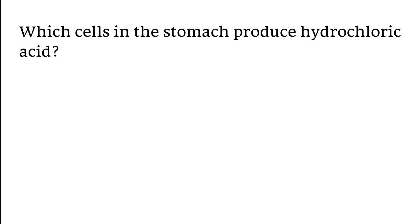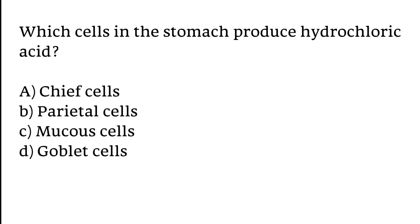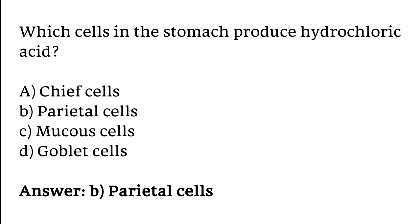Which cells in the stomach produce hydrochloric acid? Chief cells, parietal cells, mucus cells, goblet cells? The correct answer is option B. Parietal cells in the stomach produce hydrochloric acid.